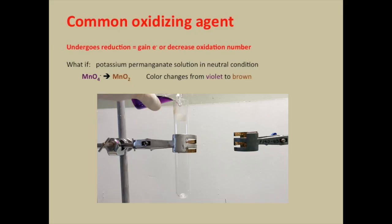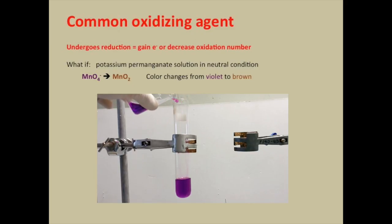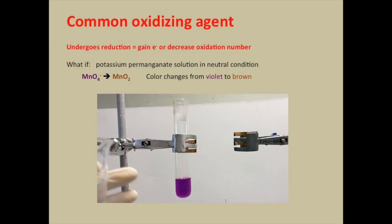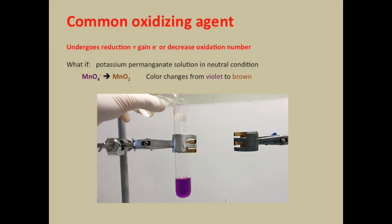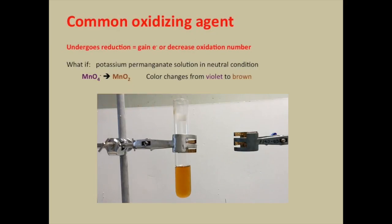First, I add some violet solution. This time there is no acid inside. Now I add the reducing agent. You can see the solution does not turn colorless but turns brown, because manganese(II) ion does not form. Instead, the product formed is manganese(IV) oxide, which is MnO₂.